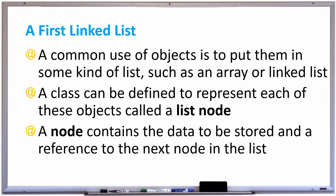A class can be defined to represent each of these objects in the list called a list node. A node contains the data that's stored and also a reference to the next node in the list. So if you imagine that you have a list of items where each item is aware of the item right next to it — that's a linked list.